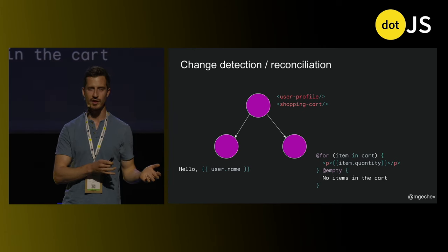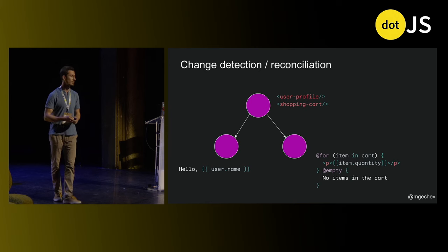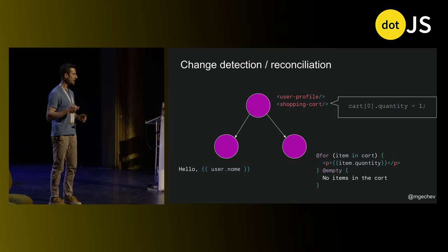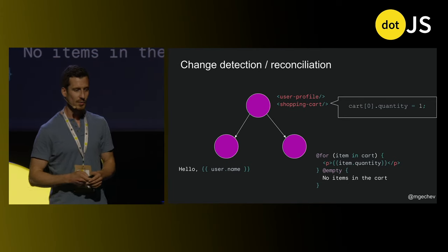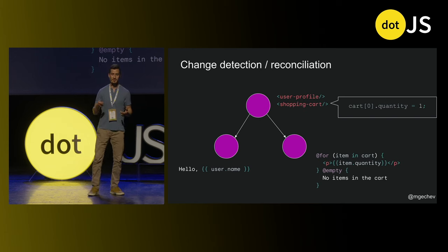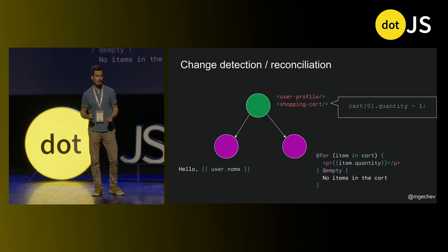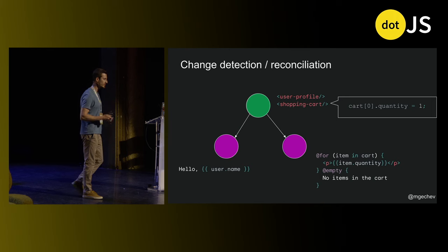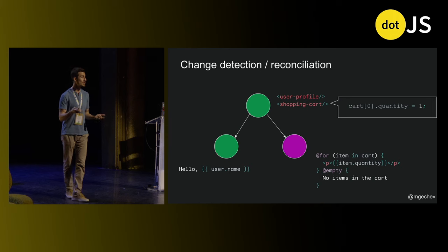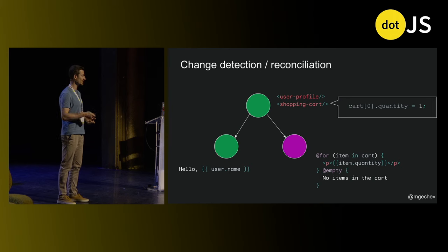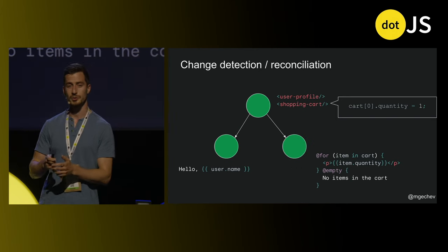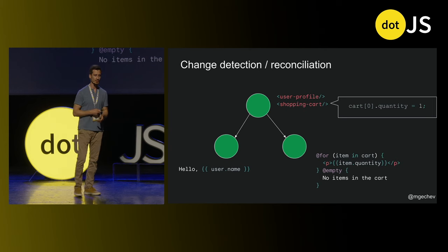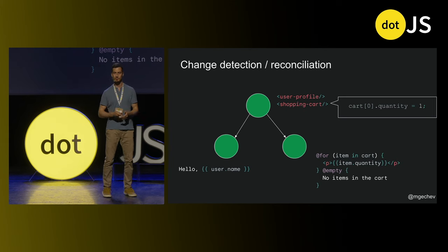We have the user profile component on the left and the shopping cart component on the right. If we update the state of the cart — say, change the quantity of the first item to one — both Angular and React perform change detection or reconciliation using very much the same algorithm. They traverse the component tree from the root, go to the user profile component where nothing has changed, and finally go to the shopping cart component that contains the modified item and update the view.